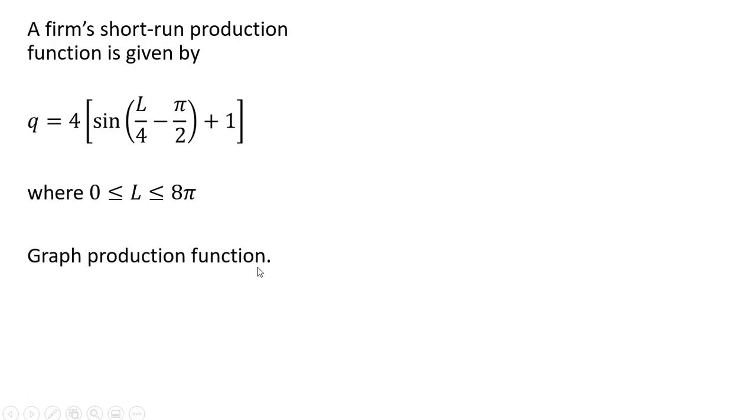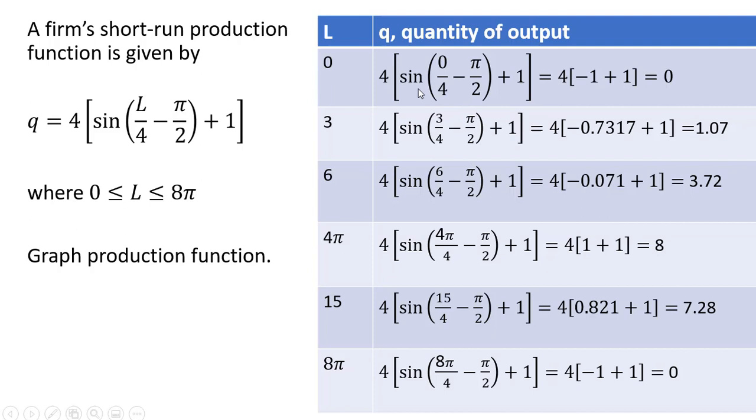We want to graph the production function. So I'll start here with a table. I'll put various values of L into this production function and calculate the corresponding quantity of output. So if L is zero, we have the following.